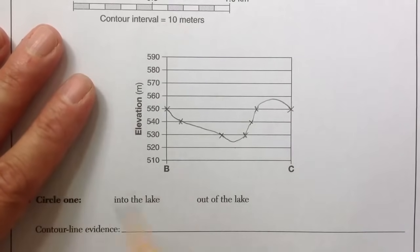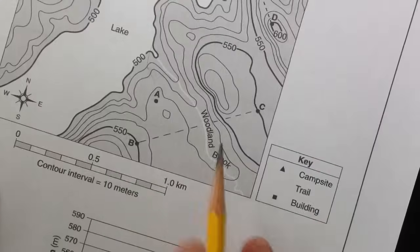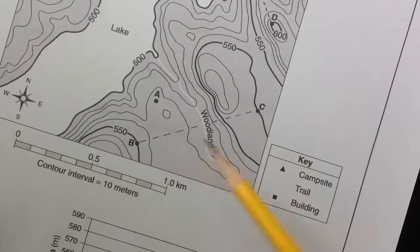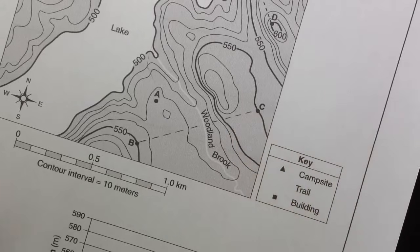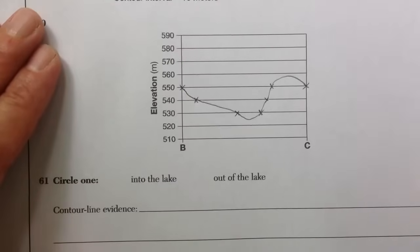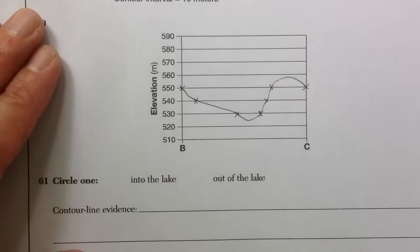And that's the profile from B to C. That's what this would look like from the side. Right here. If you were looking here, here's that stream valley of Woodland Brook. And then here's sort of this little uphill section here, a rounded hill. So that's how you draw profiles. Well, Mr. Gadsden, thanks for watching.